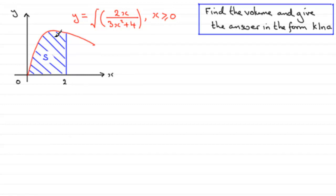And we've got this region S bounded by the curve, the line x equals 2 and the x-axis. And if we were to spin this area around the x-axis, we're going to generate a volume, a volume of revolution.